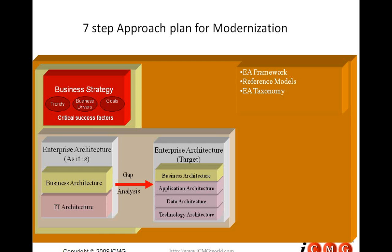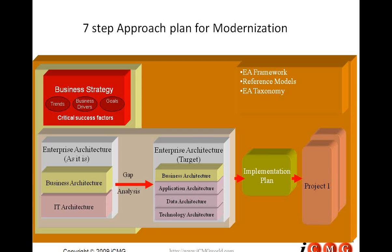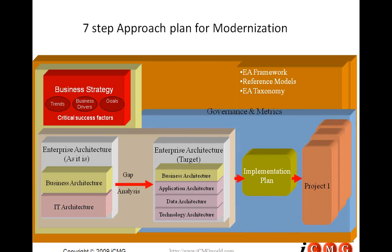Then we look at gap analysis — comparing the business architecture of the past with the business architecture of tomorrow, and the IT architecture of the past with the IT architecture of tomorrow. Once we have the gap analysis and know where the gaps exist and at which levels and categories, we look at prioritization: identifying which projects go first, prototyping, and based on the lessons learned, rolling out for multiple projects.